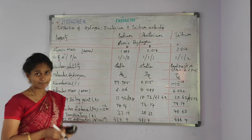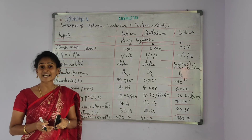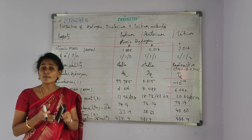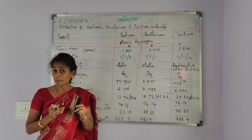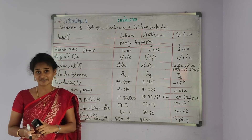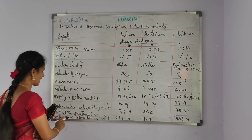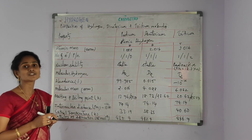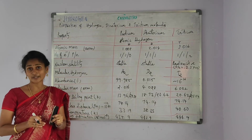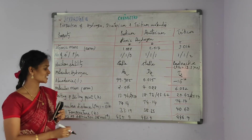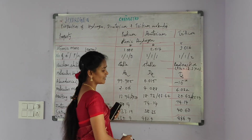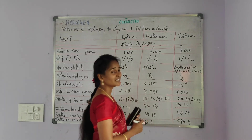Critical temperature of a substance is defined as the temperature at and above which the vapor of the substance cannot be liquefied, no matter how much pressure is applied. Enthalpy of dissociation, also called bond dissociation energy, is the energy required to break a bond. Values: protium 435.9 kJ mol⁻¹, deuterium 443.4 kJ mol⁻¹, and tritium 446.9 kJ mol⁻¹.